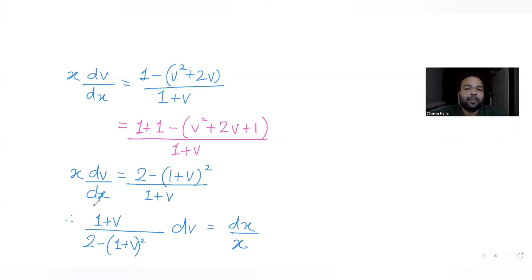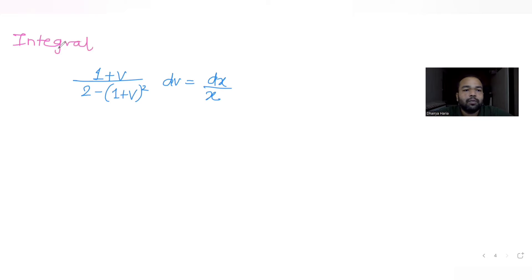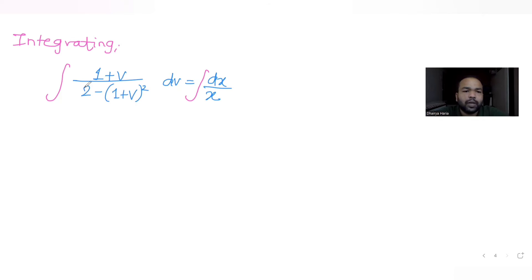Once I separate the variables I can integrate both sides to find the solution of the differential equation. So integrating both sides: the integral of (1 plus v) / [2 minus (1 plus v)²] dv equals the integral of dx/x. To handle the left side, I substitute t = 2 minus (1 plus v)².